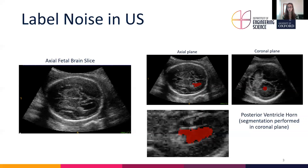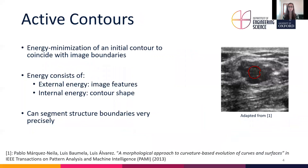Of course you can go back and forth between the different views, but it is a very challenging task. For this reason there will always be some label noise in our training labels. In the past, active contours have been used to segment structures in ultrasound or other modalities.